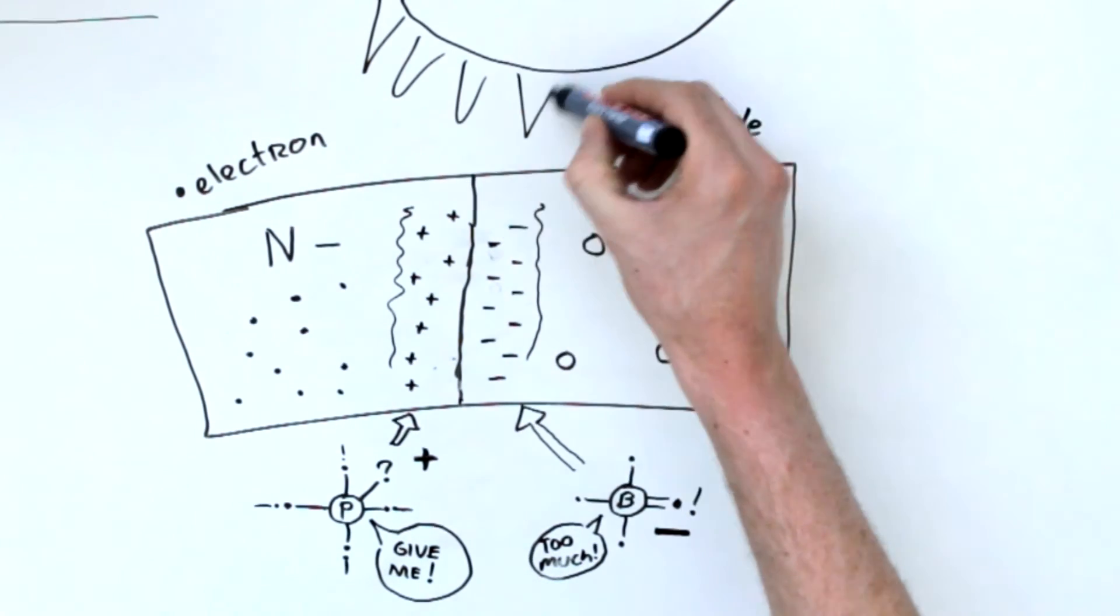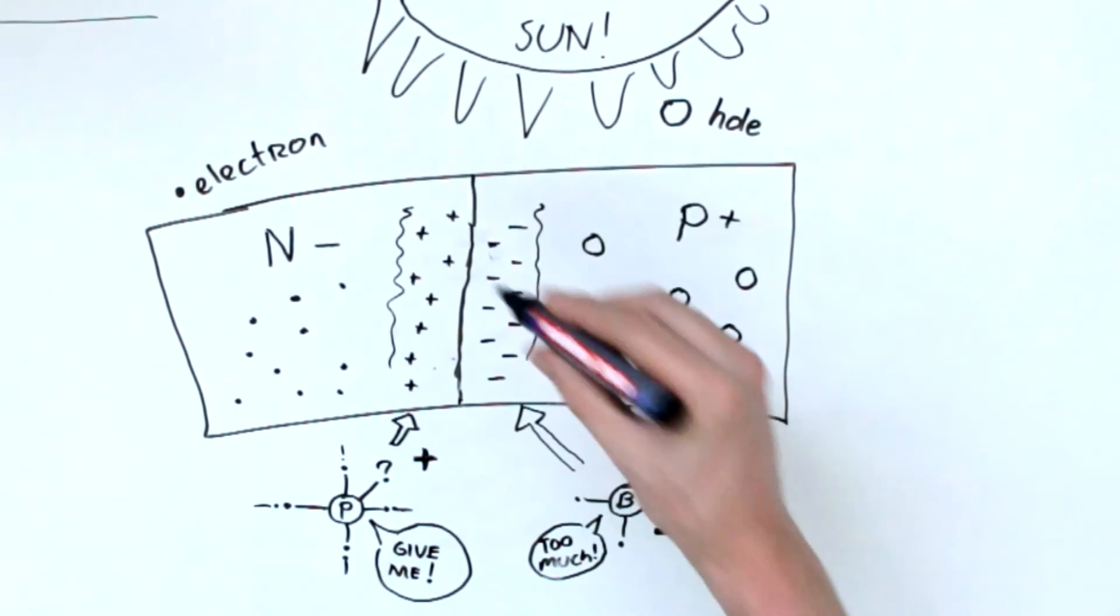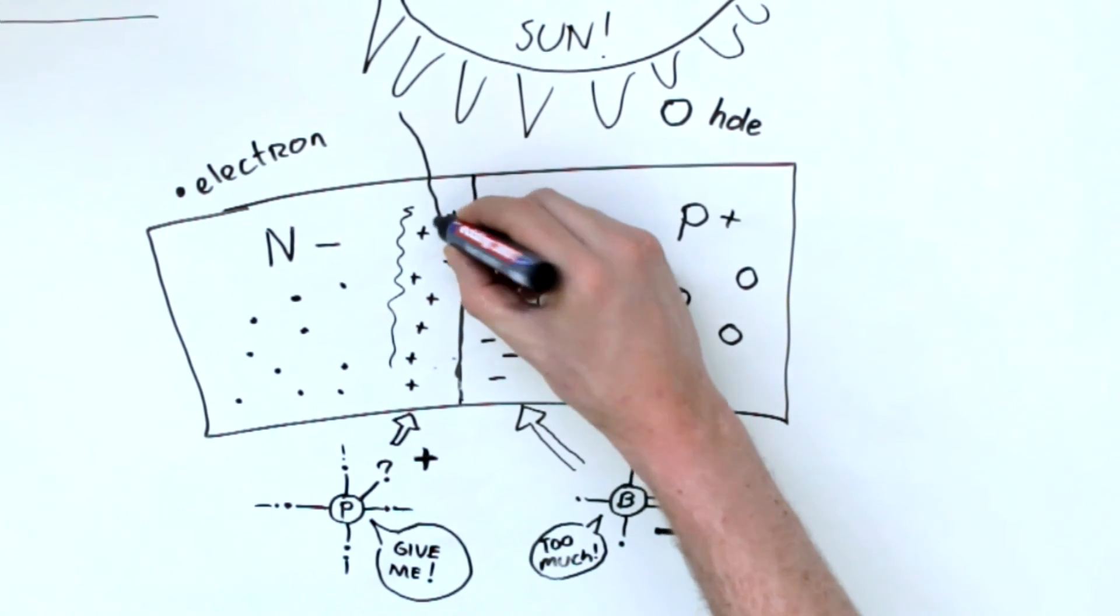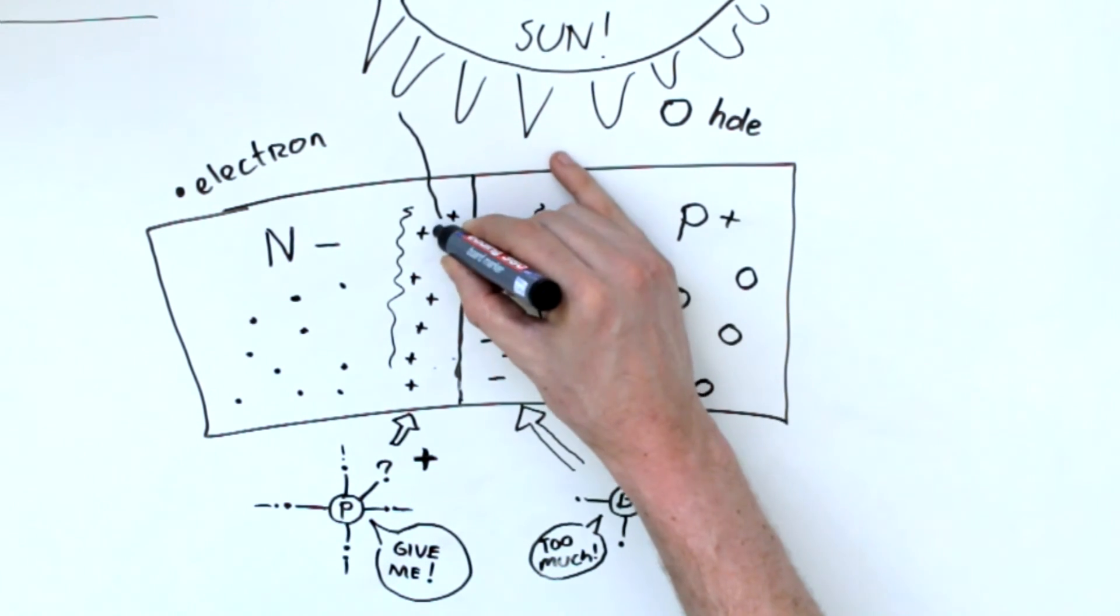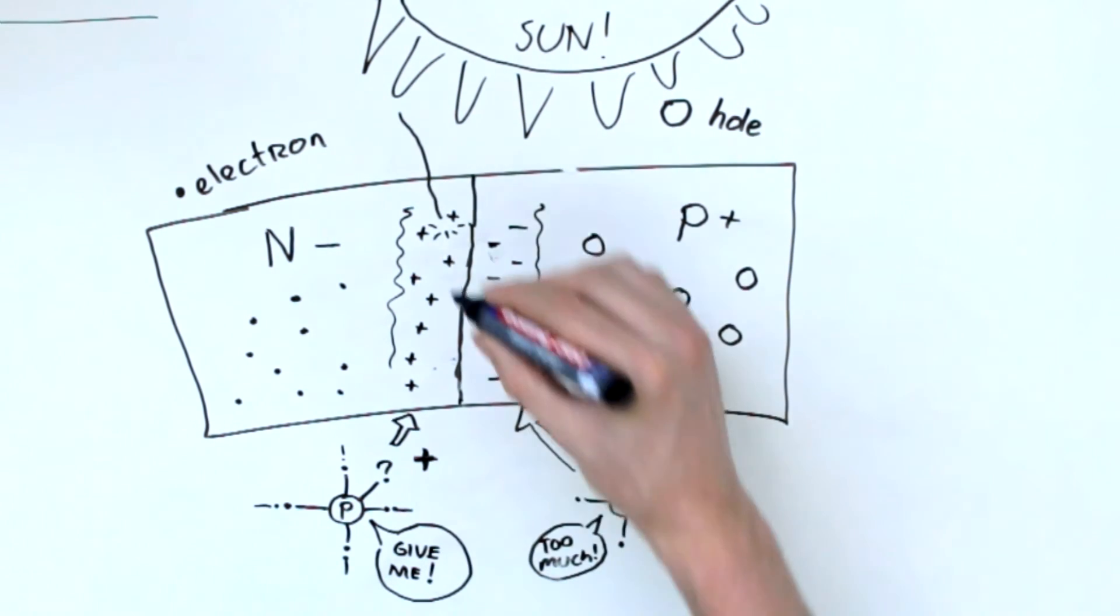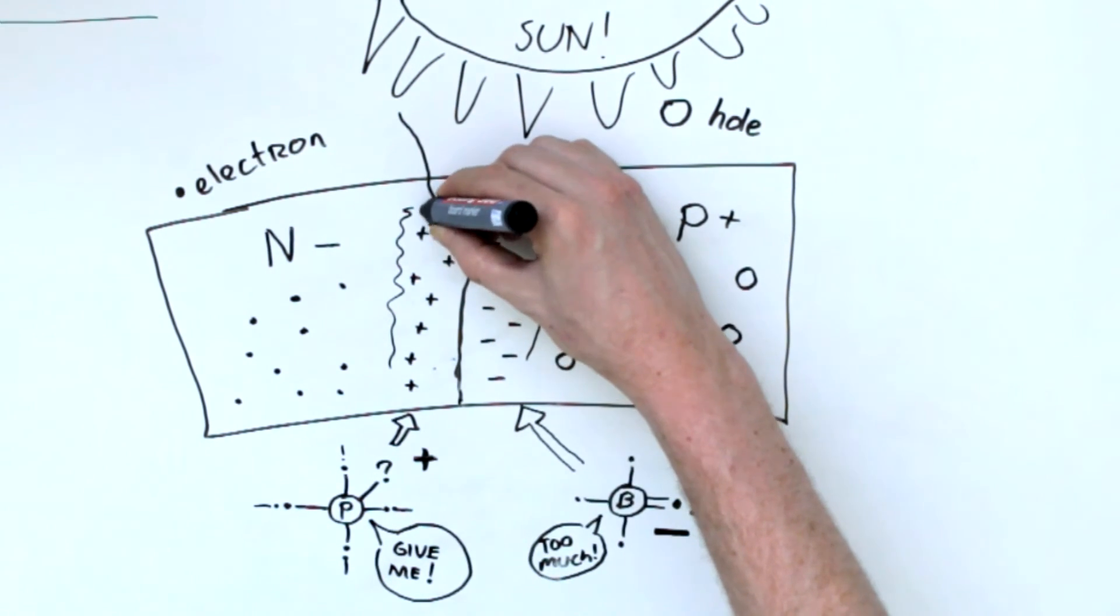So what happens when we introduce sunlight? Well, sunlight is made up of photons. Tiny particles without mass, just pure energy. And when a photon hits our P-N junction, it occasionally crashes into an electron, knocking it loose. This creates a free electron and a new hole.